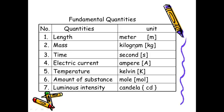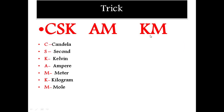Now I'm going to tell you a trick to remember these seven fundamental units — meter, kilogram, second, ampere, Kelvin, mole, candela. If you observe these seven starting letters, I'm going to make a trick using them. CSK — Chennai Super Kings, the well-known IPL team. AM and KM are also well known, so no need to struggle to remember.